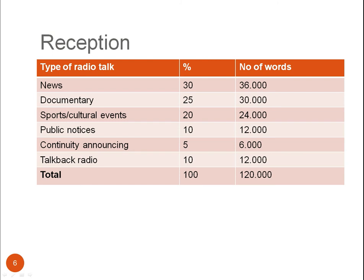Imagine you want to design a corpus of radio talk. If you take reception as a starting point, you may start with an analysis of radio talk to find out what the proportion is of different types of radio talk that listeners are exposed to. For example, you might find that 30% of all radio talk is made up of news and 10% of talkback radio programs. You may then design a corpus that tries to mimic these proportions. This is a reception-based corpus — it does not contain an equal amount of words from each type of radio talk.